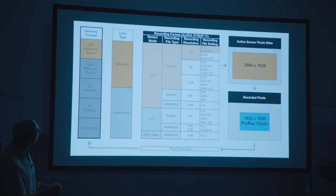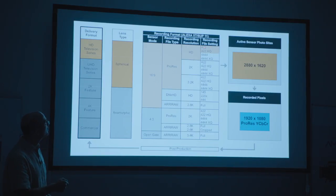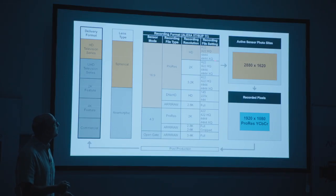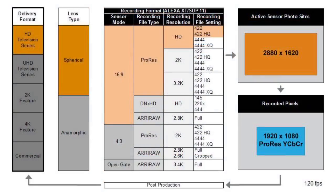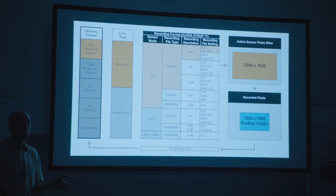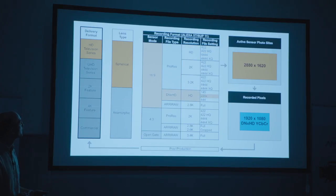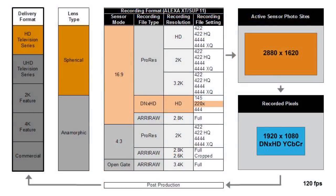A less frequently used workflow is also 16x9 ProRes HD, but using one of the lesser codecs with a higher compression ratio and thus a lower data rate. You get the same 2880x1620 sensor area and 1920x1080 file, but encoded as ProRes YCbCr rather than RGB. If you need to reduce your data rate, that's the way to go. Also done occasionally is shooting 16x9 with spherical lenses and recording in DNxHD — 220x is the most popular codec — giving you a 1920x1080 DNxHD YCbCr file.